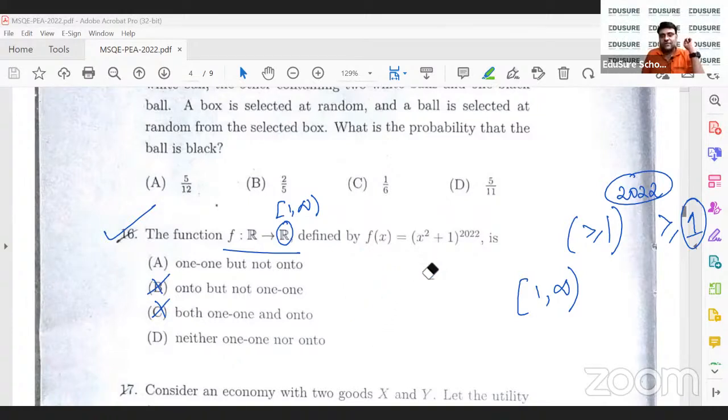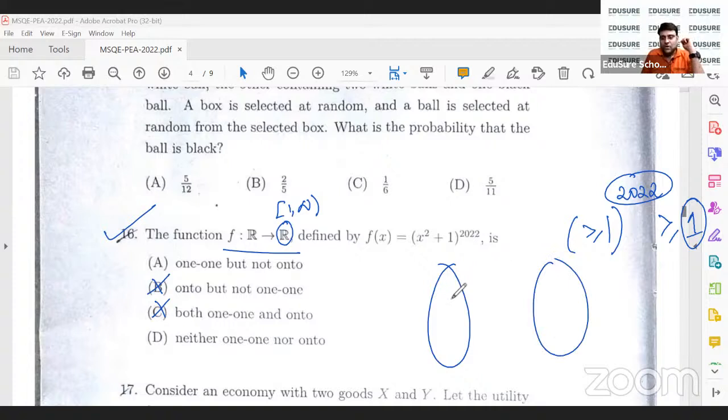A 1 to 1 function is a function that has 1 x value going to exactly 1 value in the co-domain. So, are multiple values going to 1 value? If multiple values are going to 1 value, like for example, 2 and minus 2, if both are going to 1 value, then it is not 1 to 1. It is a many to 1 function.